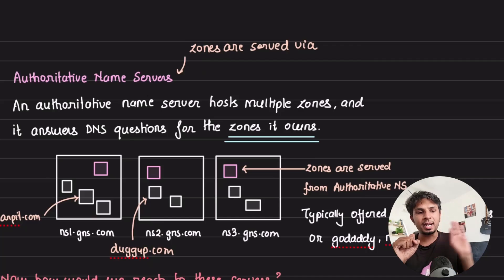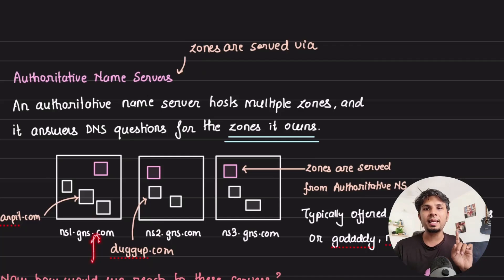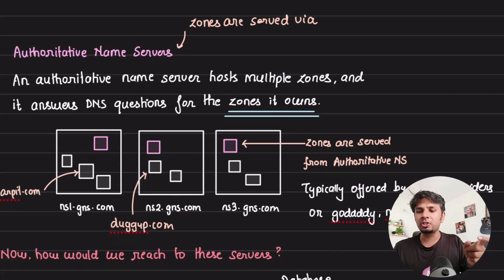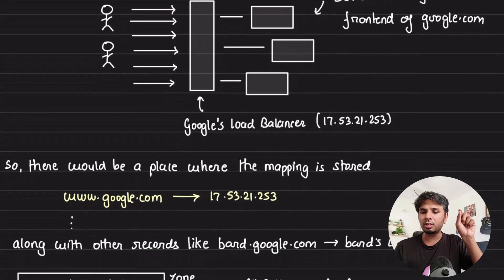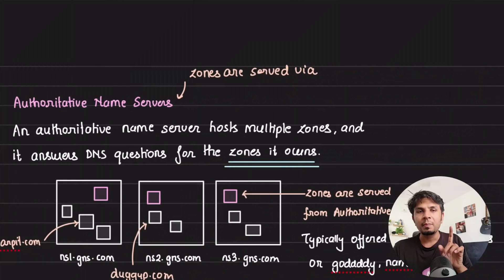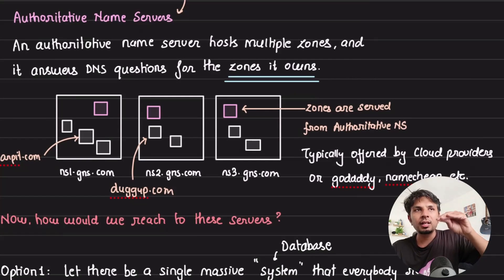Authoritative name servers are the ones on which zones are hosted — given a request, they send the response for the corresponding value. So if someone reaches out to these name servers asking where to connect for www.google.com, it can retrieve the IP address and serve it. But somehow the request needs to reach these name servers first.